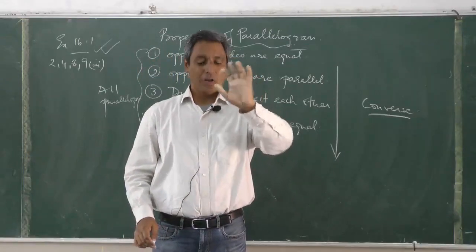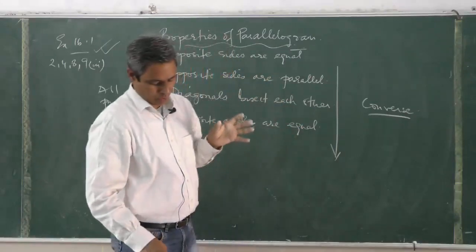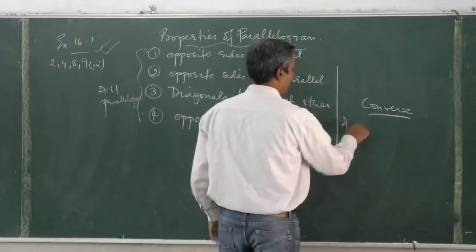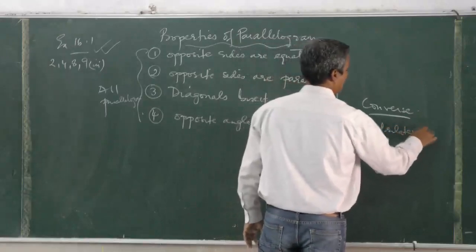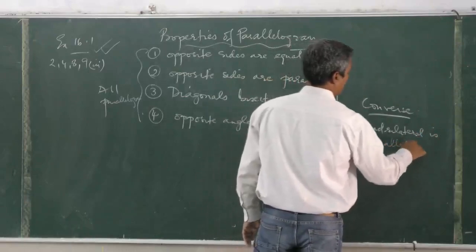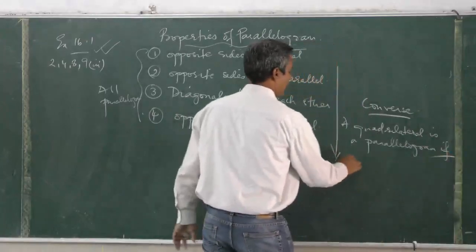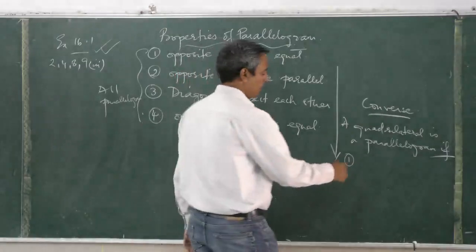Yes, but what are those special properties? A quadrilateral is a parallelogram if - what are the special properties? Number one: opposite sides are equal.